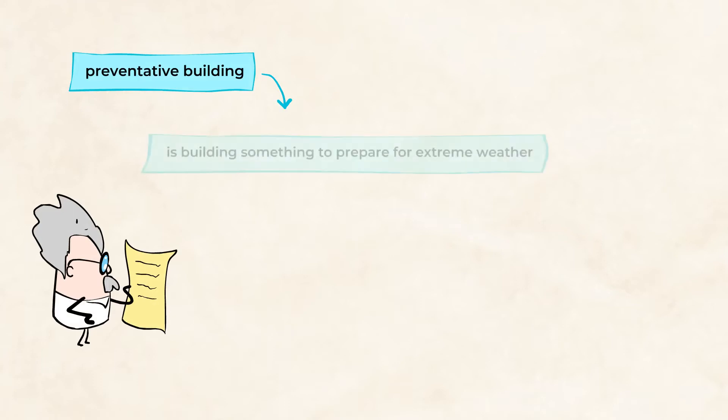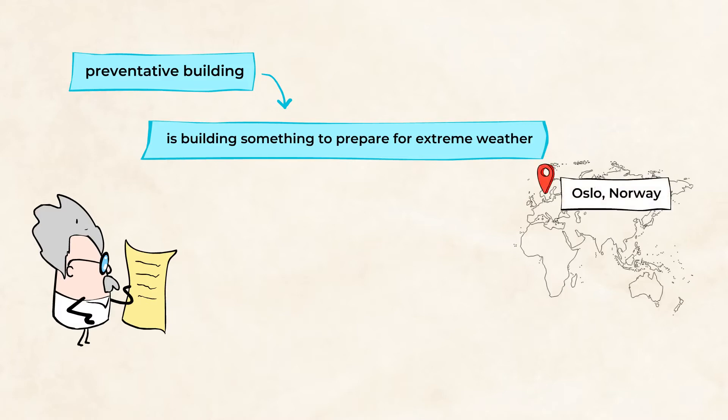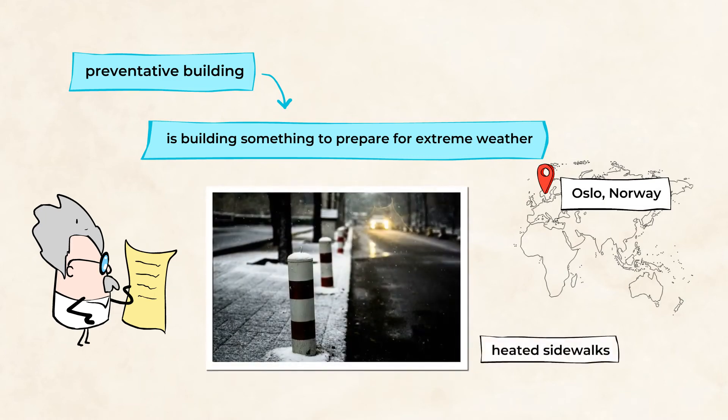Preventative building is building something to prepare for extreme weather. To help people stay safe during a blizzard, in places like Oslo, Norway, for example, heated sidewalks help melt the snow and ice to allow people to walk around safely.